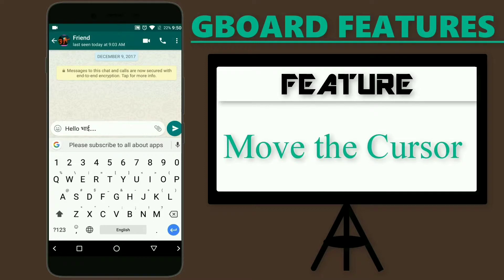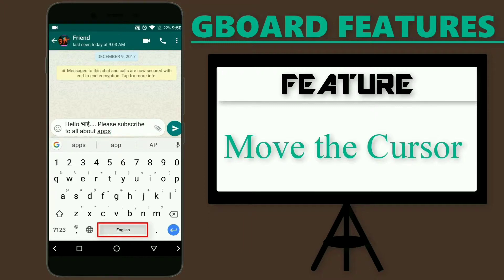It happens many times that you are not able to move the cursor to the exact location. But Gboard provides an easy way to do so — you can move the cursor by sliding across the space key. If you want to move the cursor left, slide left. If you want to move it right, slide from left to right. I literally loved this feature.